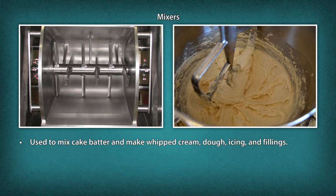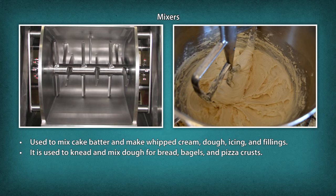In a spiral mixer, the bowl of the mixer rotates and the hook spins at the same time while spinning and kneading the dough in a spiral manner. It is used to knead and mix dough for bread, bagels and pizza crusts.